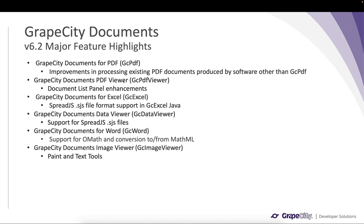So this is the agenda of today's webinar. In GC PDF we have made improvements in processing existing PDF documents produced by other software, with certain API additions. In GC PDF Viewer we have enhanced the document list panel and added new properties. In GC Excel we now support the SpreadJS .sjs file format in GC Excel Java and GC Data Viewer. In GC Word we now support adding Office Math content and conversion to or from MathML. In GC Image Viewer we support new paint and text tools.